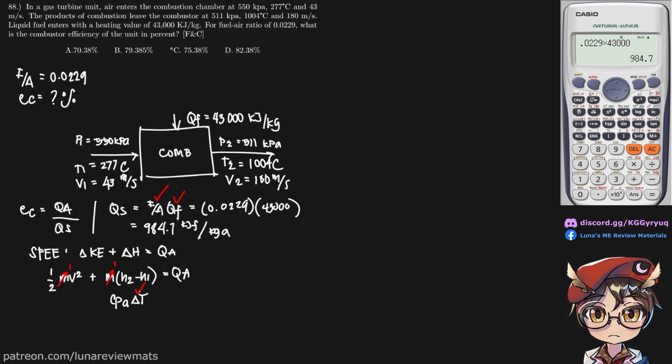Now before you use this, we should assume that p1 is equal to p2, meaning the pressure is constant. As you can see, 550 and 511 are pretty close to each other, so although they're not exactly equal, they are approximately equal. And we should be able to use the specific heat of air, which is simply 1.